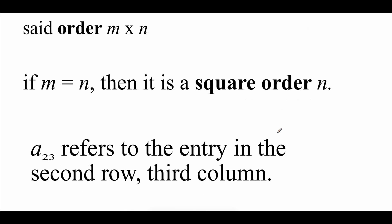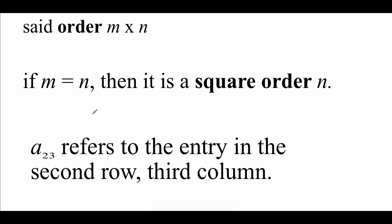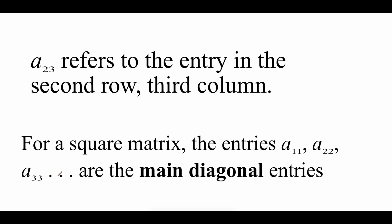Because we have these rows and columns, we can talk about specific entries in our matrix. So A sub 2,3 means that we're talking about the entry in the second row, third column. If we're looking at a square matrix, the entry A 1,1 is first row, first column. A 2,2 would be second row, second column. A 3,3 would be third row, third column, and so on and so forth.